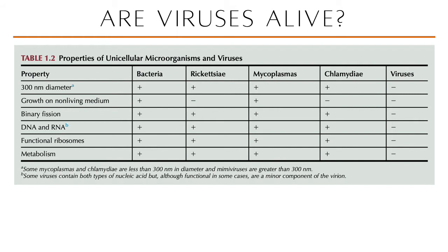This table summarizes the properties of unicellular microorganisms — bacteria, rickettsiae, mycoplasmas, and chlamydia — compared to viruses. All unicellular microorganisms are at least 300 nanometers in diameter; viruses are not. Usual properties in unicellular microorganisms are absent in viruses: they are not capable of binary fission, they cannot grow on non-living medium — meaning they need host cells to multiply — and they do not have their own metabolic mechanism.